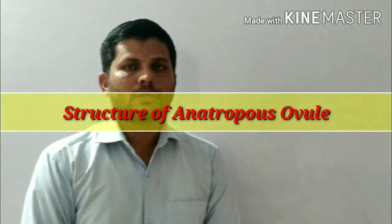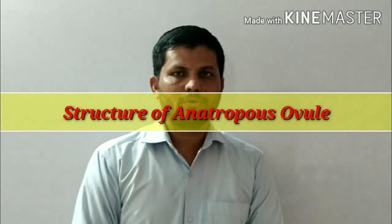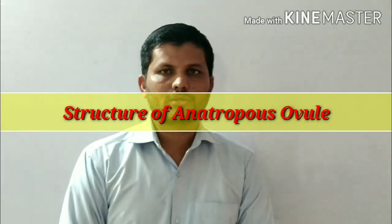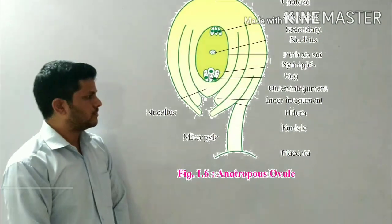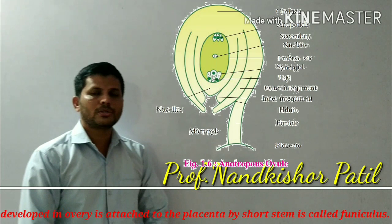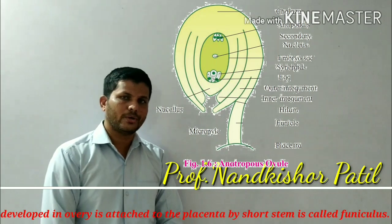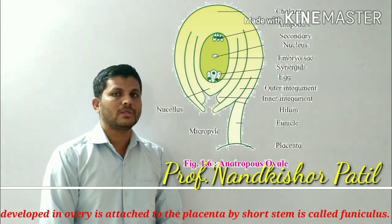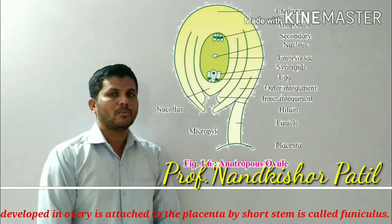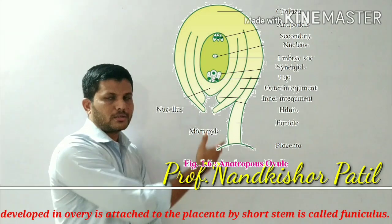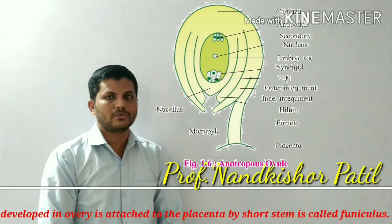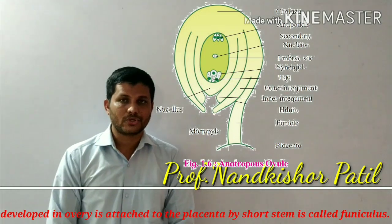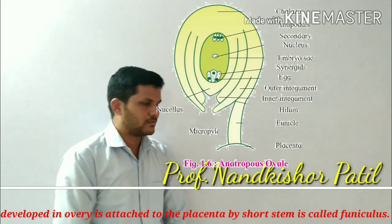Good morning all of you. In this video we are going to see the structure of the anatropous ovule. So each ovule is developed in the ovary and is attached to the placenta with a small stalk. You can see here the stalk is attached to the placenta, which is called as the funicle.